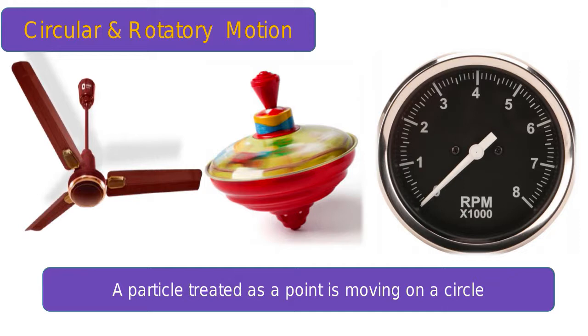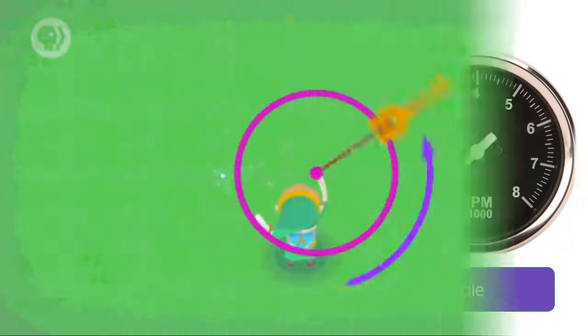In rotational motion, all parts of an object or body rotate around a fixed point or axis. It means that the object is turning or spinning around itself. Some more examples of rotational motion are rotating helicopter blades, the spinning of Earth on its axis, and rotating wheels of vehicles.